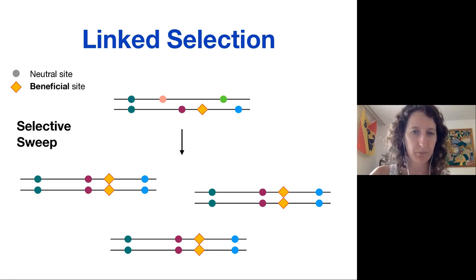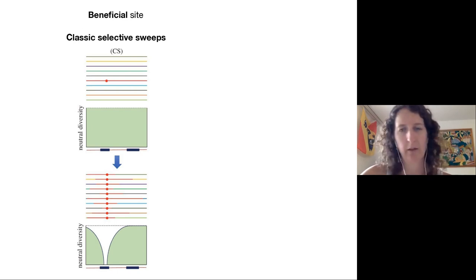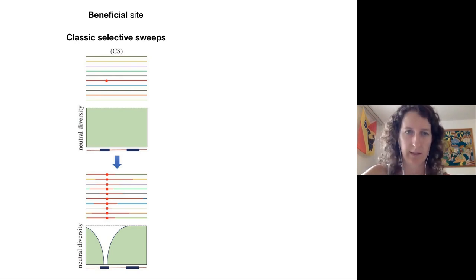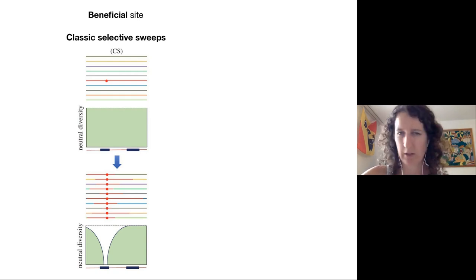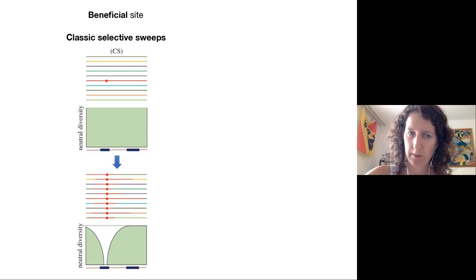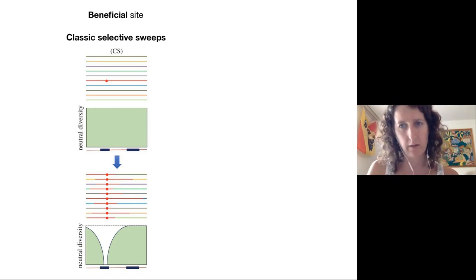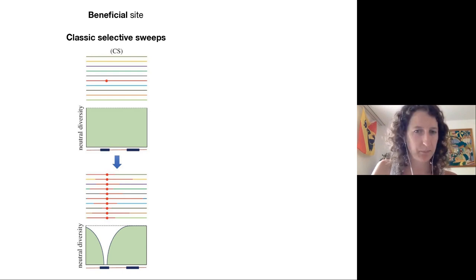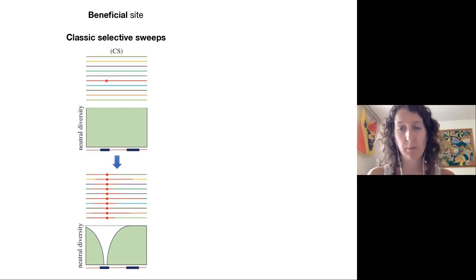If we look at a signal across a whole genome for many individuals, a classic selective sweep shows: before, many different haplotypes; one beneficial mutation arises and is then fixed everywhere. Diversity is hugely reduced right where the sweep happened, and increases as we move further away because recombination has had more opportunity to break linkage at greater genomic distances.